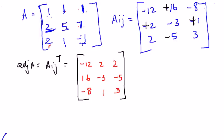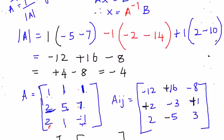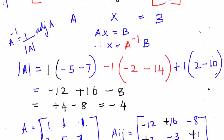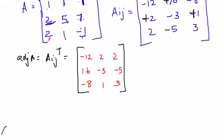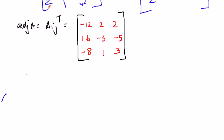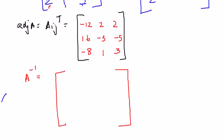We know A⁻¹ = (1/|A|) × adj(A) and |A| = −4. So we divide the adjoint matrix throughout by −4. A⁻¹ = (1/−4) × [−12, 2, 2; 16, −3, −5; −8, 1, 3].